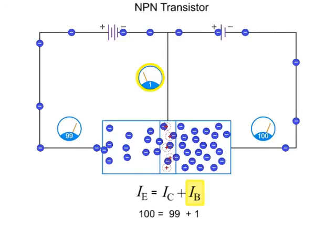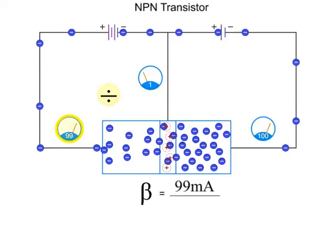An important characteristic of a transistor is something called beta. Beta is calculated by dividing the collector current, IC, by the base current, IB. So, in this example, beta would be equal to 99 milliamps, the current at the collector, divided by 1 milliamp, the current at the base, giving a beta of 99.